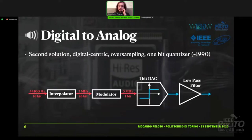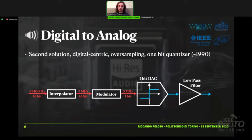Then in the 90s a revolution began with the delta-sigma modulator. The initial Nyquist signal is interpolated to achieve an oversampling of N times 44 kHz. The delta-sigma modulator has the ability to shrink the number of bits from 16 to one — from 65,000 levels to only 2 — so that we can use a one-bit DAC with only two levels. From two levels there can be only one straight line, so it is very linear, but it has a great amount of noise outside the audio band.